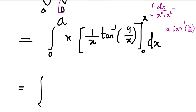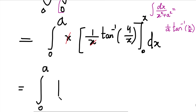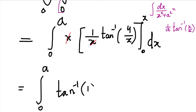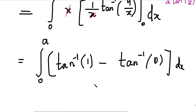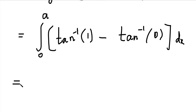Applying the limits of the inner integral: at y = x (upper limit), we get (1/x) tan⁻¹(x/x) = (1/x) tan⁻¹(1). Since x is constant in the inner integration, x/x cancels to give 1, so we get (1/x) tan⁻¹(1). Then minus the lower limit: at y = 0, we get (1/x) tan⁻¹(0/x) = (1/x) tan⁻¹(0). Now tan⁻¹(1) = π/4 and tan⁻¹(0) = 0. So the inner integral gives (1/x)(π/4 − 0) = π/(4x), and the x in the numerator from x·(1/x) cancels.